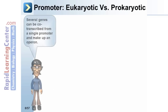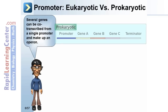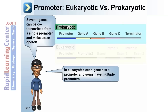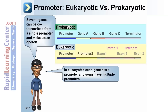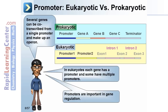Promoter: Eukaryotic versus prokaryotic. Several genes can be co-transcribed from a single promoter and make up an operon. In eukaryotes, each gene has a promoter and some have multiple promoters. Promoters are important in gene regulation. Notice the structural differences between the prokaryotic and eukaryotic promoters shown here.